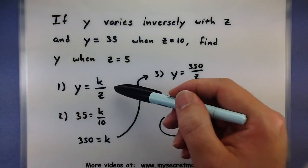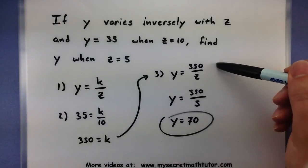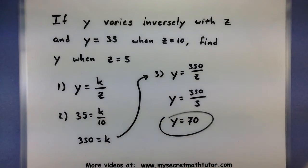So again, you write down the formula, you solve for k, then you solve the rest of the problem using that last little bit of information it gives you. Let's look at another one of these.